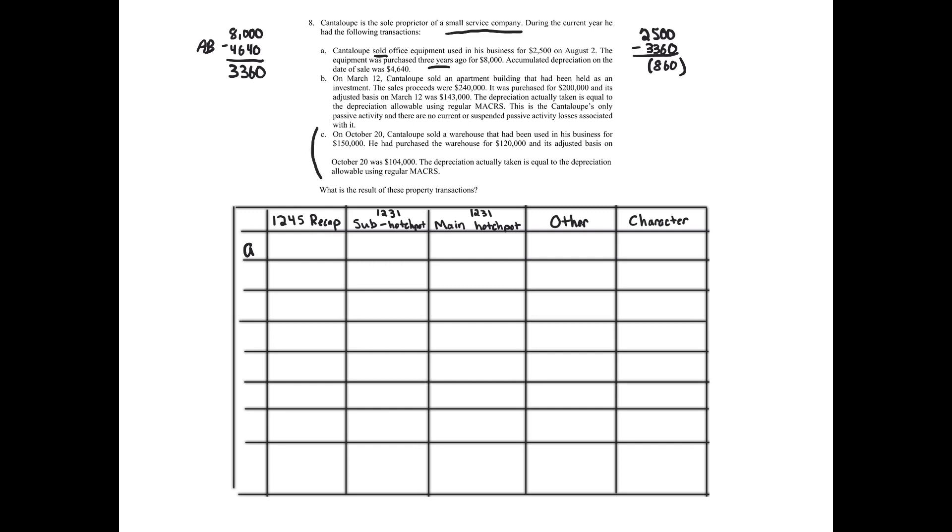Move on to Section 1231. Does Section 1231 apply? Yes. Sale or exchange of business property that's depreciable held for more than a year. It's held for three years. So it looks like it's going to be the main hodgepodge, $860. Before we put it there, does Section 1245 apply? No, why not? Loss. Exactly. Perfect. Moving on. Getting stuff done.